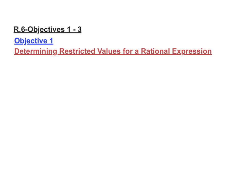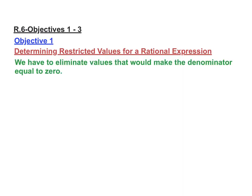I'm going to go over three different things in this R.6 and so we'll just get into it. The first objective is determining restricted values for a rational expression. Essentially what we're really doing is determining what values are going to make denominators equal to zero because as you know you can't divide by zero. That's the gist of this first part.